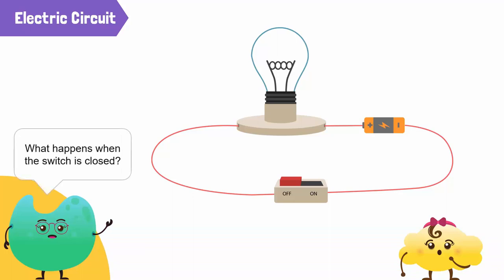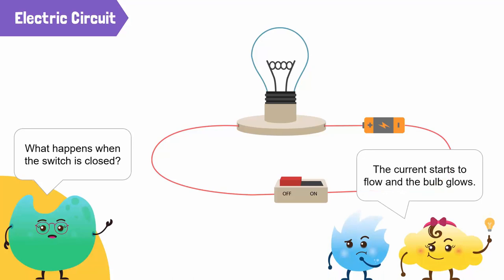What happens when the switch is closed? The current starts to flow and the bulb glows. That's right!